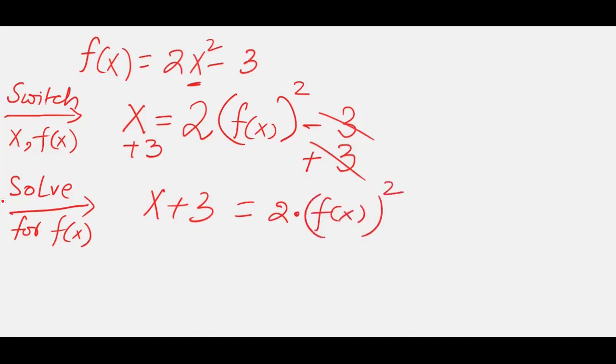So now this 2 is multiplied. So easily we can take care of this 2 by dividing both sides. So this 2 and 2 is cancelled, and on this side we are left with f of x squared.